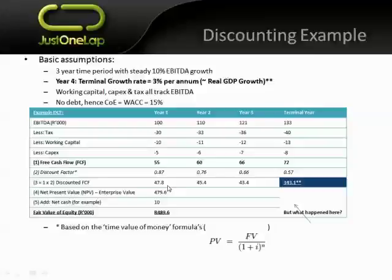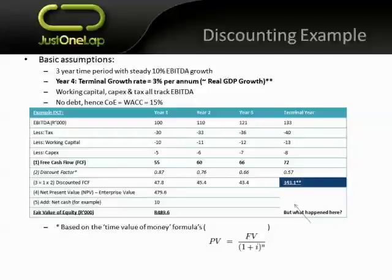I know I'm throwing a lot of numbers around — valuations include numbers, I can't get away from it. You can see that even though free cash flow grew in year two to 60, the WACC discount of 15% means the discounted value is actually 45, less than year one. There's a strange number in the terminal year which I'll explain in a moment. Adding up all the discounted free cash flows gives a net present value of 479,600 rand.